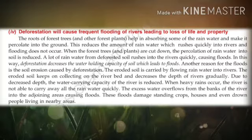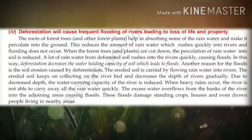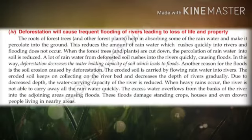Now let us discuss the fourth consequence: deforestation will cause frequent flooding of rivers, leading to loss of life and property. The roots of forest trees and other forest plants help in absorbing rain water and making it percolate into the ground. These roots act like a sponge — they absorb rain water, allow it to percolate into the ground, and increase the groundwater level. This reduces the amount of rain water which rushes quickly into rivers, so flooding does not occur.